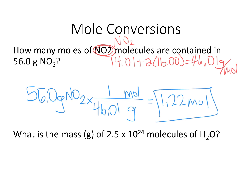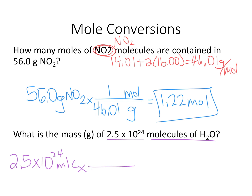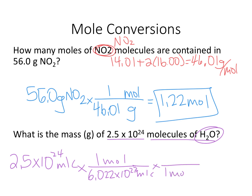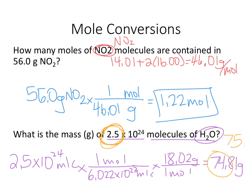What is the mass of 2.5 times 10 to the 24 molecules of water? There are 6.022 times 10 to the 23rd molecules in every one mole of substance. Water is 18.02 grams per mole, so one mole of water has a molar mass of 18.02 grams. Multiplying: 2.5 times 10 to the 24 divided by 6.022 times 10 to the 23, times 18.02, gives 74.81 grams. With two significant figures, that rounds to 75 grams.